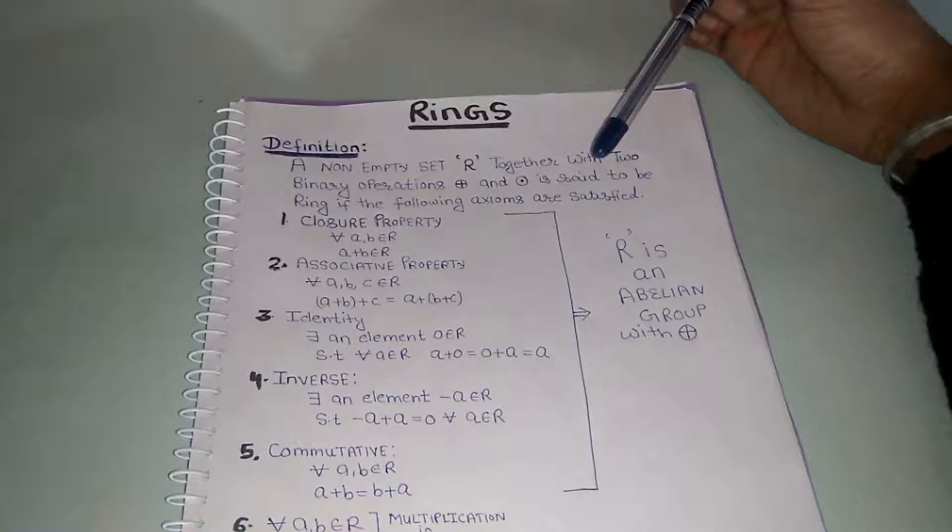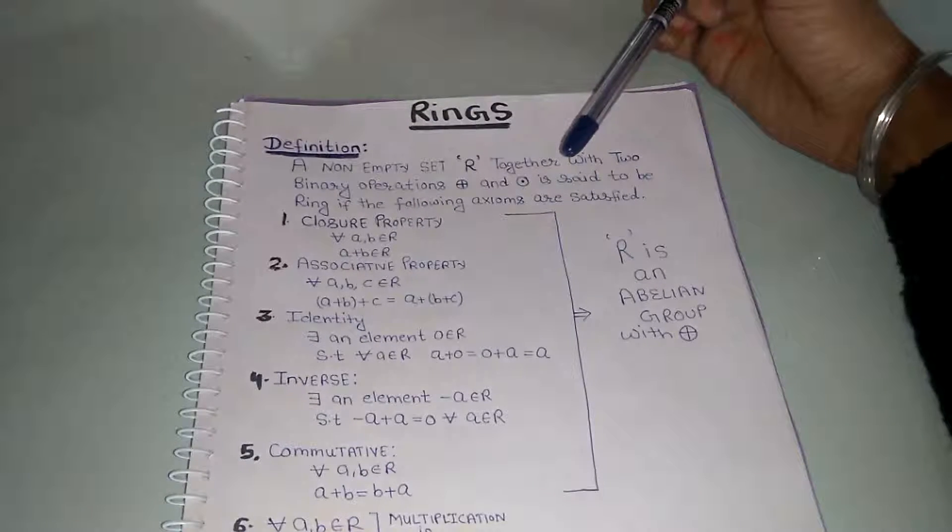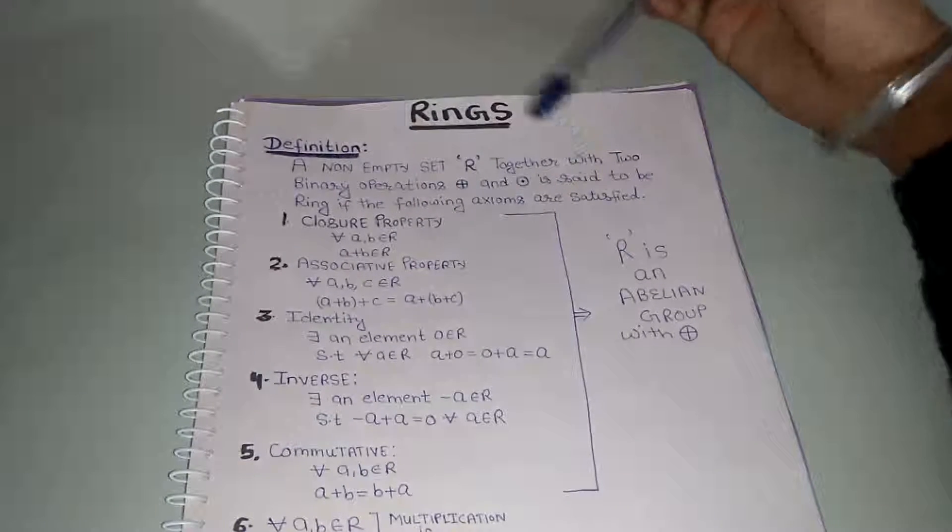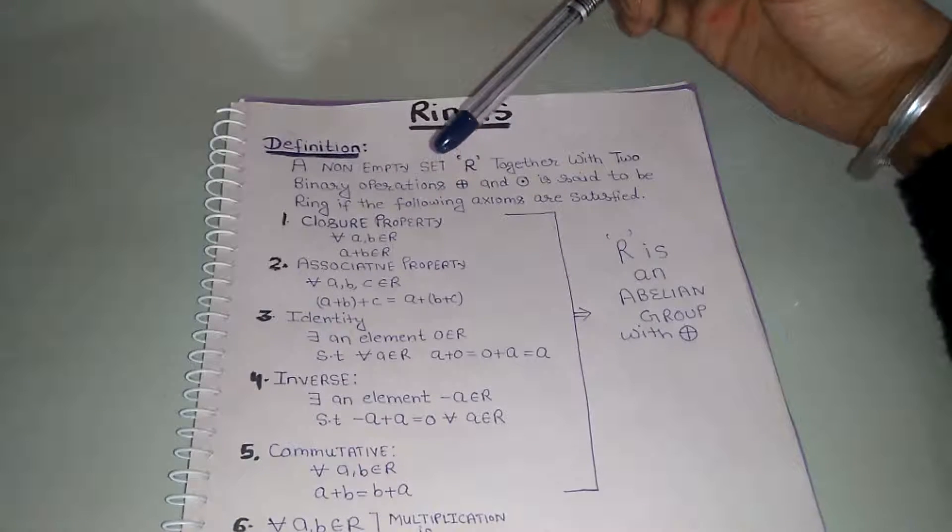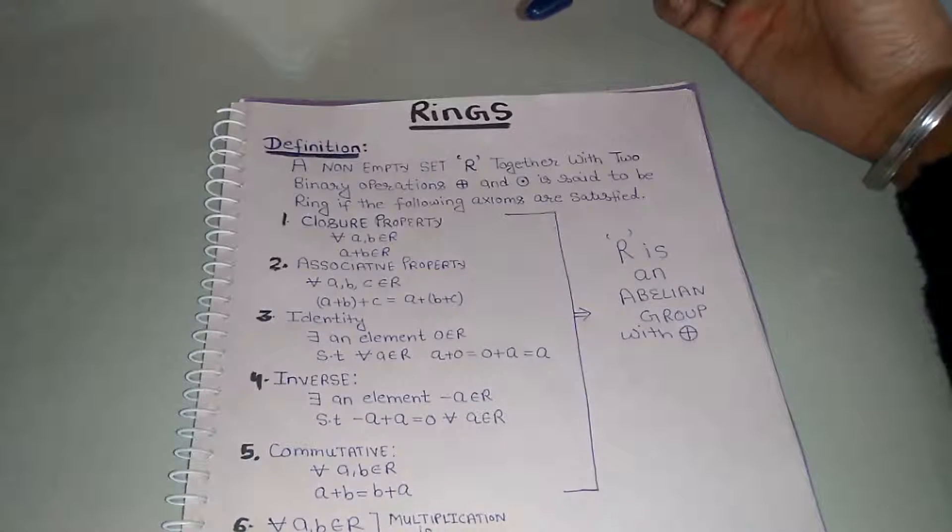The axioms are: first one is closure property. It states that for all A, B belongs to R, if we have A plus B belongs to R, it means this property holds good in R.